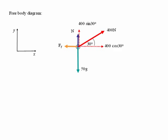So if we resolve the 400 newton force into two components, one in the vertical direction and one in the horizontal direction, as shown now.